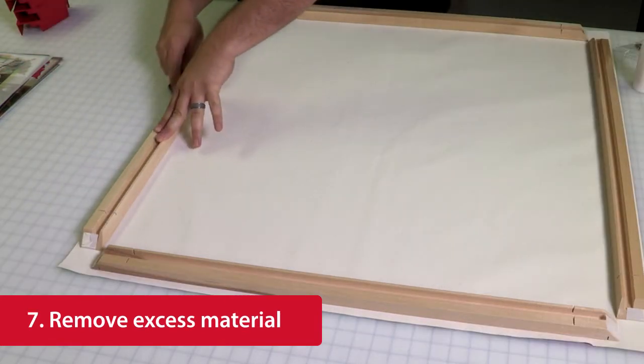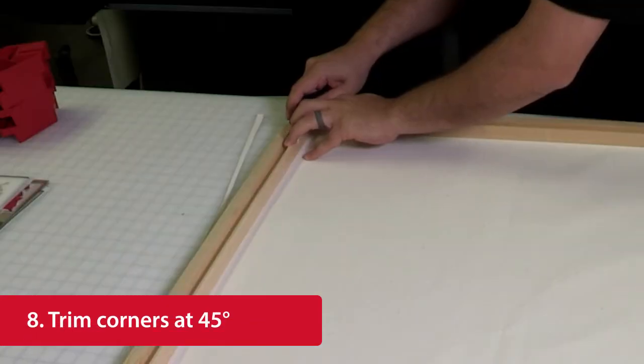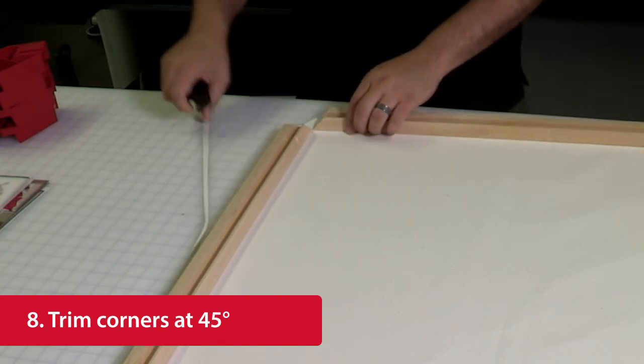Use the trimmer from the starter kit to remove any excess material. Be sure to trim the material at the corners at a 45 degree angle.